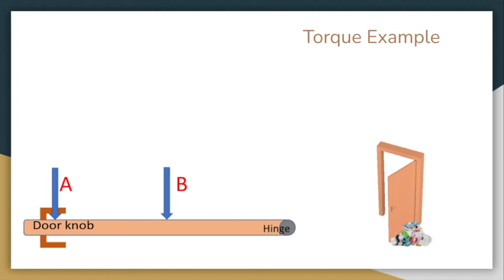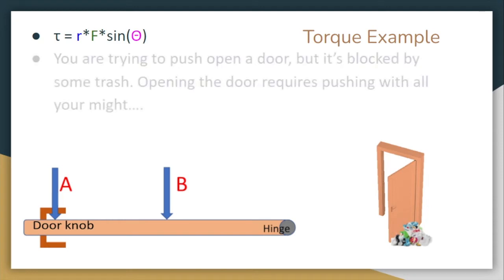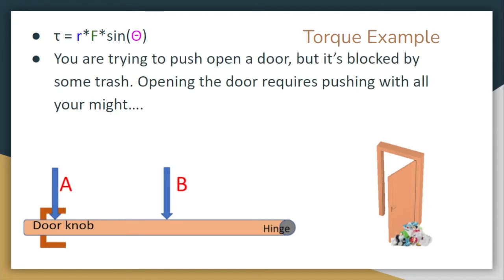Let's take a look at a conceptual example here on a door and how it might be easy or difficult to open that door. And we have our equation from before. So let's say that you are trying to push open a door, but it's blocked by some trash. Opening the door is going to require you to push with all your might. Where does it make the most sense to push that door? Are you going to push it really close to the hinge? Or are you going to push it really far away by the doorknob?